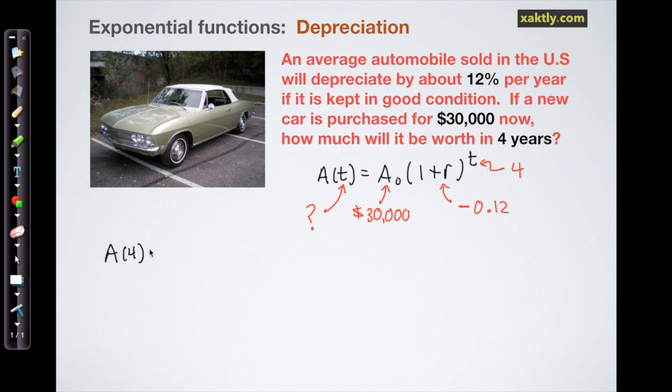So now let's just write that problem out and solve it. A of four is equal to $30,000, well, 1 minus 0.12 is going to be 0.88 raised to the fourth power.